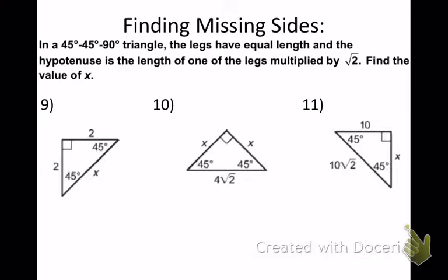Take a couple of seconds and try these three 45-45-90 triangles on your own. Number 9: legs are 2 and 2, so the hypotenuse is 2 square root of 2, because the relationship is legs multiplied by square root of 2.